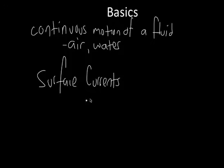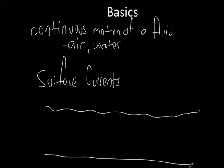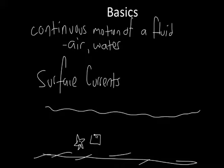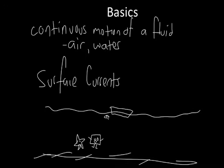As the name implies, a surface current is a current close to the surface of the ocean water. Here's the ocean, here's the ocean basin down here — that's where all the little starfish are, here's Patrick, and over here is SpongeBob. There's Patrick and SpongeBob hanging out in the ocean basin, and here's the surface of the water.